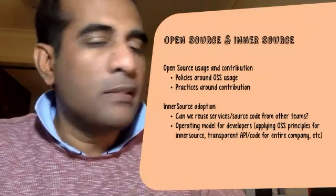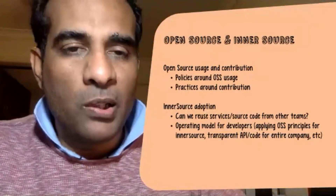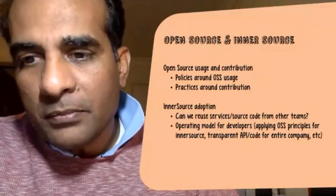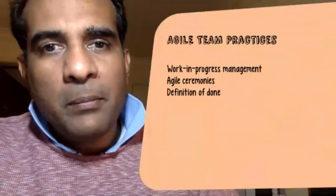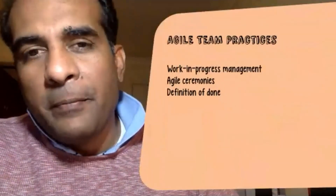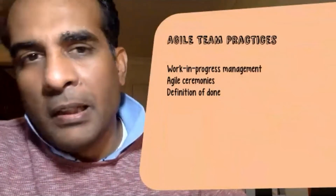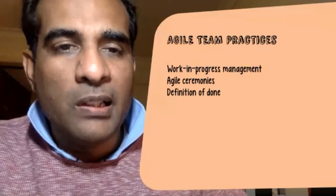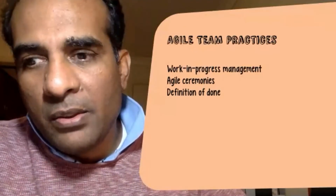All of these things play a big part in determining inner source adoption, which is an important part of your overall DVI metric. McKinsey's paper talks a lot about agility and practices — things like work-in-progress management and whether we have things like definition of done.